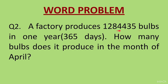Question 2. A factory produces 1284435 bulbs in 1 year, that is 365 days. How many bulbs does it produce in the month of April? In this question, they have told the number of bulbs produced in 1 year which equals 365 days. First find out the number of bulbs produced in 1 day by dividing the total bulbs by 365. Then, since April has 30 days, multiply the daily production by 30 to get the answer.